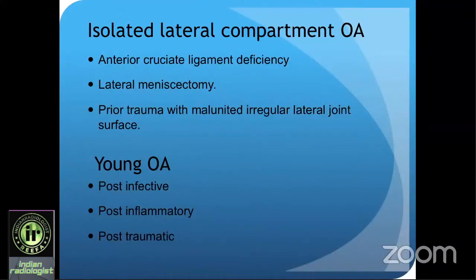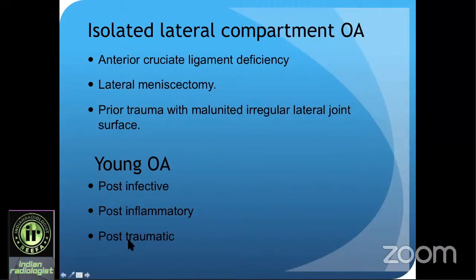Causes of isolated lateral compartment OA include: ACL deficiency, lateral meniscectomy, and prior trauma such as Schatzker fracture or lateral tibial plateau fracture causing articular surface irregularity. Causes of OA in a young patient include post-infective, post-inflammatory, and post-traumatic etiologies. Whenever you see something out of the normal, run those five points in your mind — age, joint, compartment, features against primary OA, and features of prior trauma — and your antenna should go up to find the cause of OA.